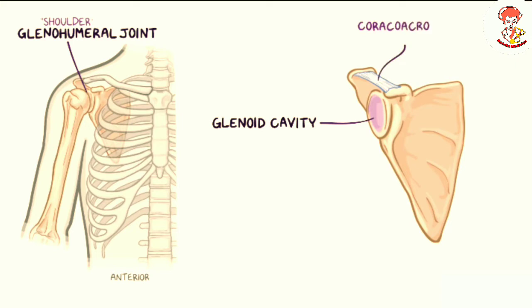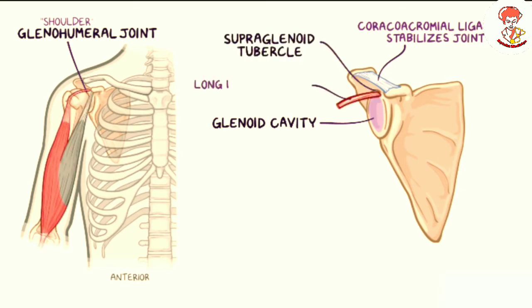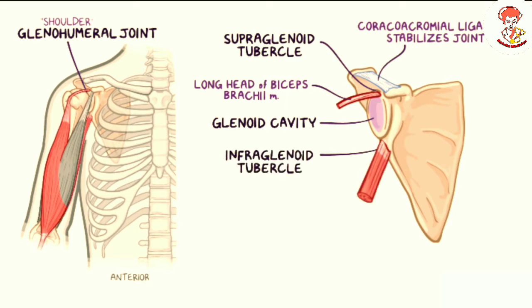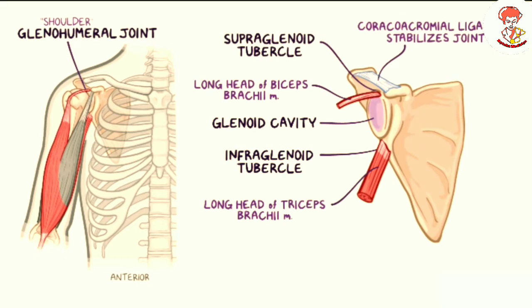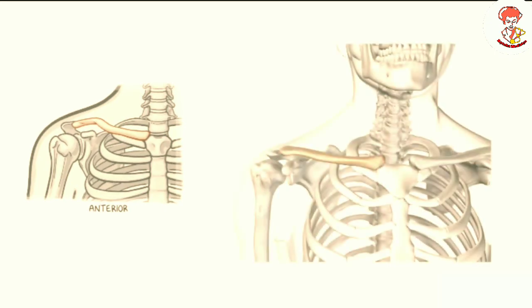The glenoid cavity fits the head of the humerus to form the glenohumeral or shoulder joint, and the coracoacromial ligament stabilizes this joint. Just above the glenoid cavity there is a small bony bump called the supraglenoid tubercle, which serves as an attachment point for the long head of the biceps brachii muscle. Immediately below the glenoid cavity there is another bony bump called the infraglenoid tubercle, which serves as an attachment point for the long head of the triceps brachii muscle.